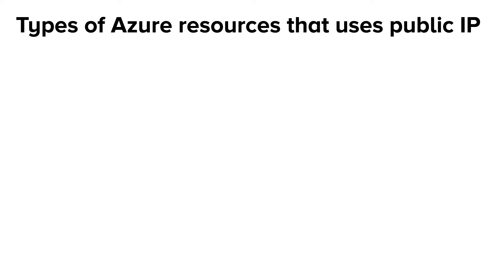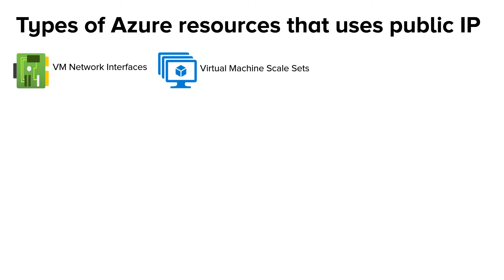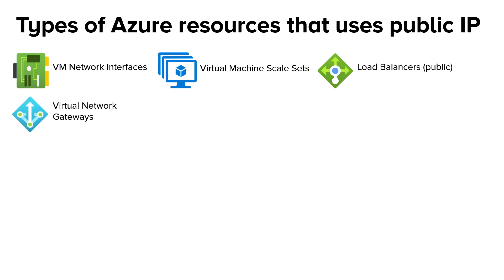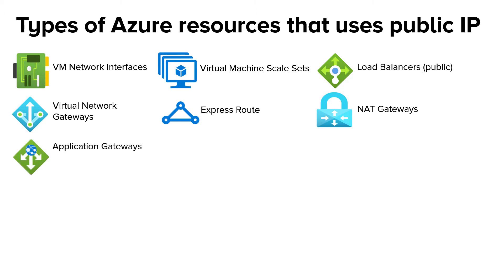A public IP address in Azure is a resource with its own properties. You can associate a public IP address with the following Azure resources: virtual machine network interfaces, virtual machine scale sets, load balancers of public type, virtual network gateways, ExpressRoute, NAT gateways, application gateways, Azure Firewall, Bastion Host, and many more.